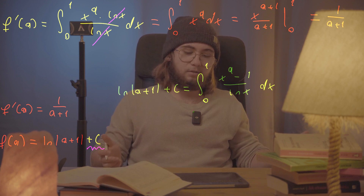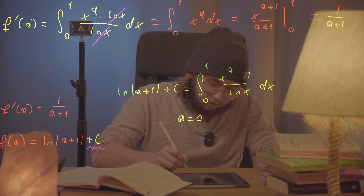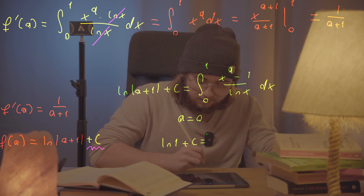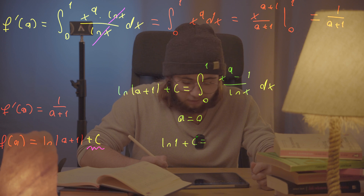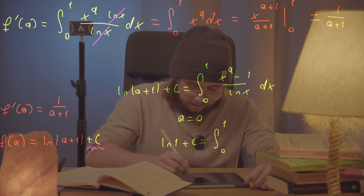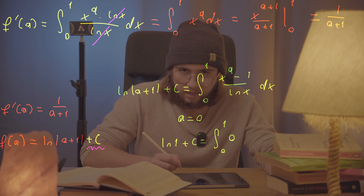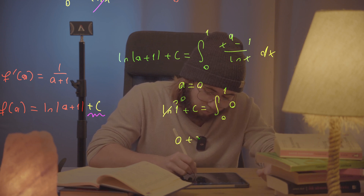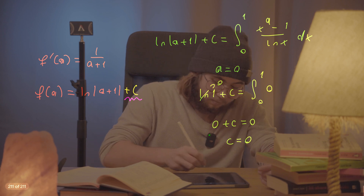Since this is true for any a, I can plug in a equal to zero. On the left-hand side I get the natural log of one plus C. On the right-hand side, x to the zero is one, so one minus one is zero — the whole integral is just zero. Since the natural log of one is also zero, we get zero plus C equals zero, so C equals zero.